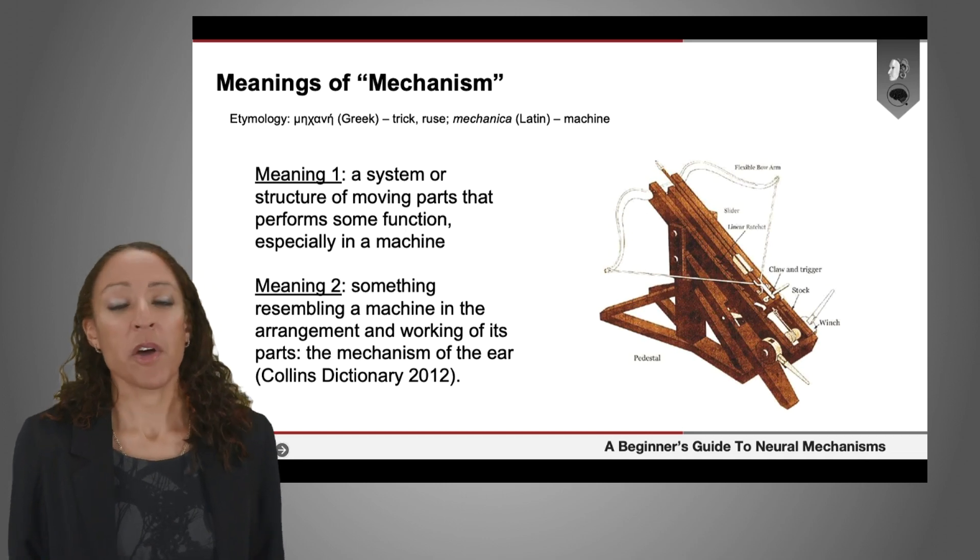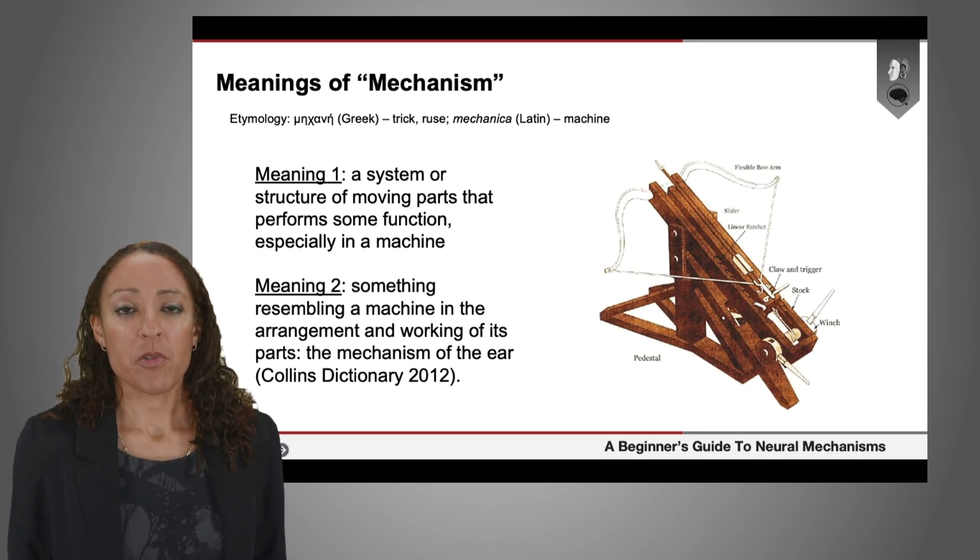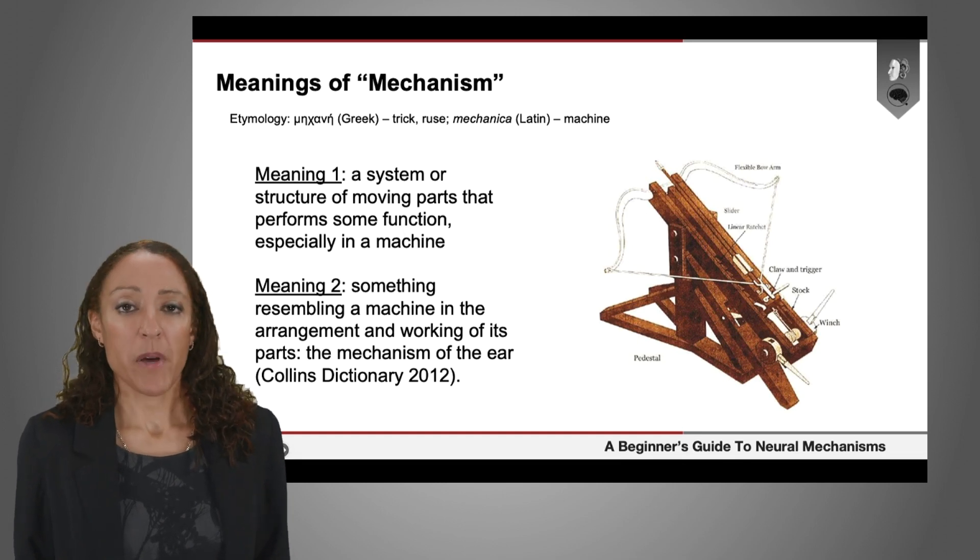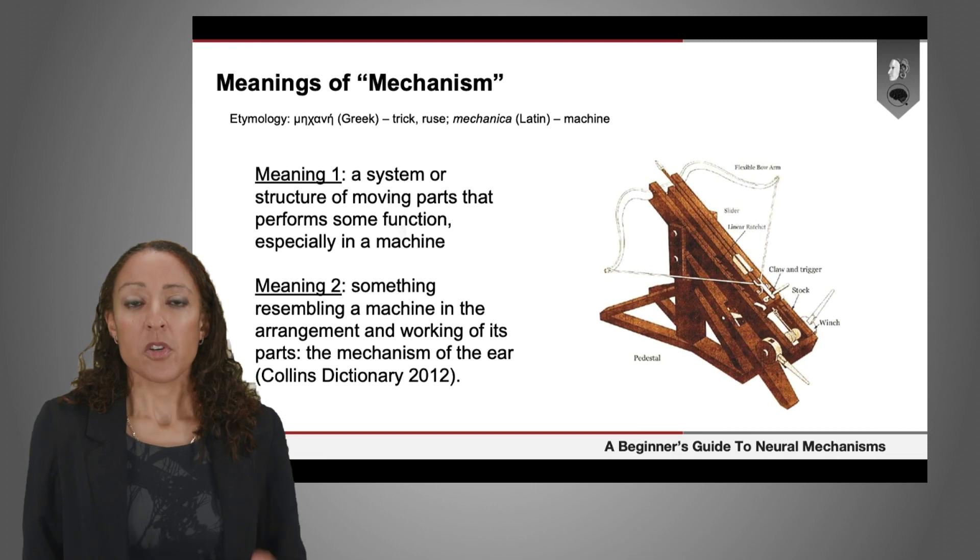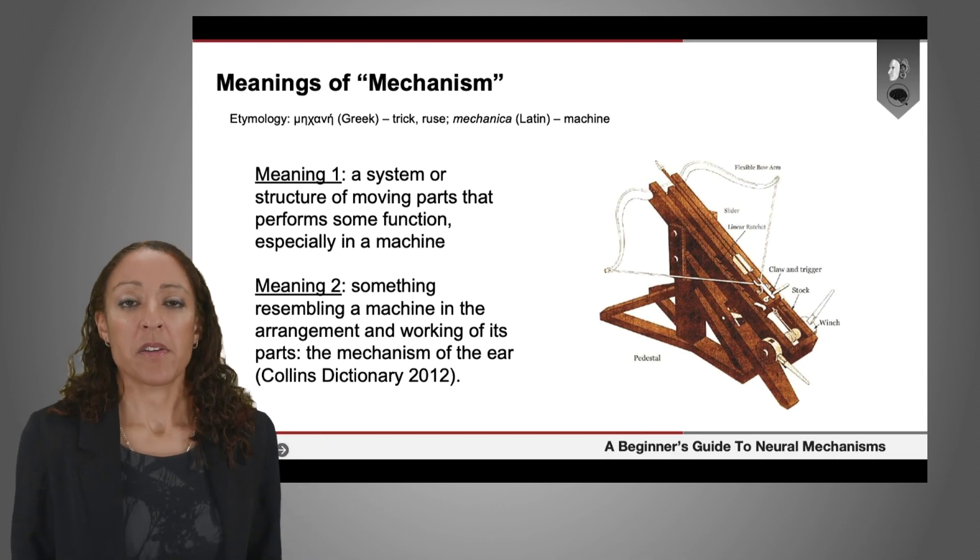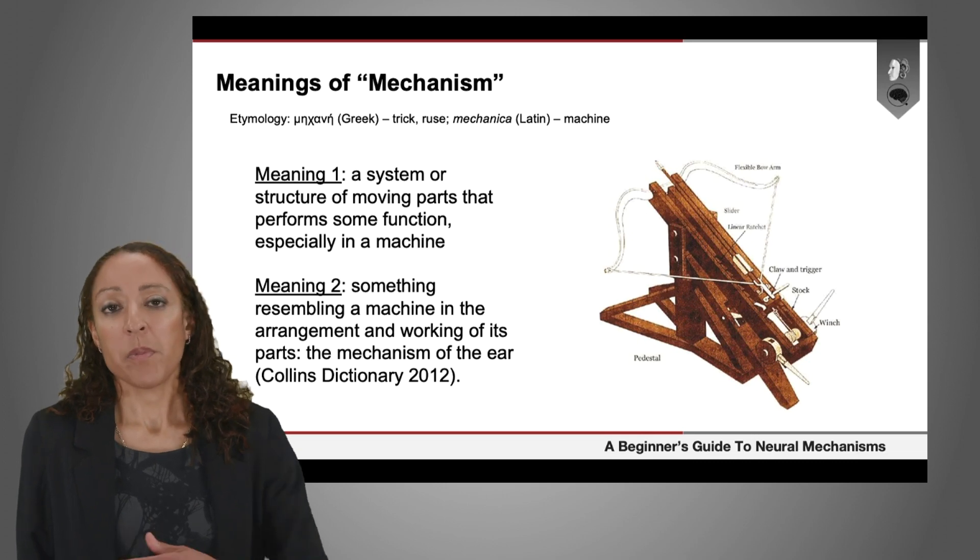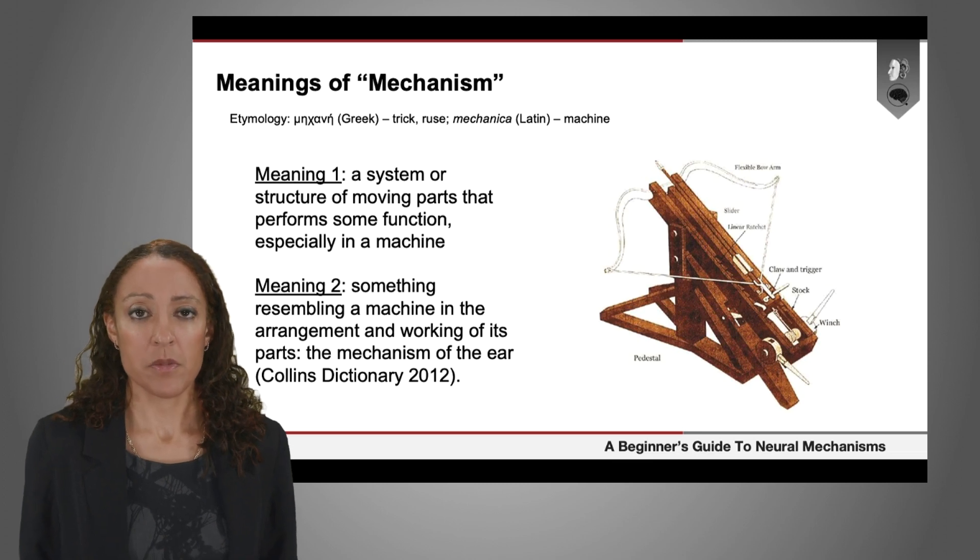Historically, the word mechanism comes from that Latin word machine, and interestingly, the original Greek word meant something like a trick or a ruse, like a device put together to create some unexpected effect. The core meaning of that word mechanism is devices that people have made, and then by analogy we can think of systems in nature as comprising mechanisms.